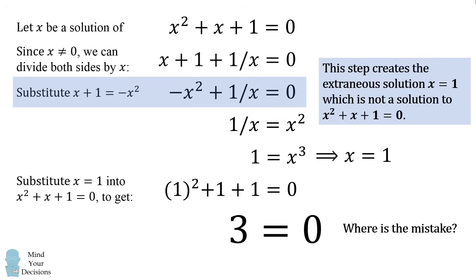The problem with this step is that it creates an extraneous solution x = 1, which is not a solution to the original equation x² + x + 1 = 0. So let me explain that in a little bit more detail.